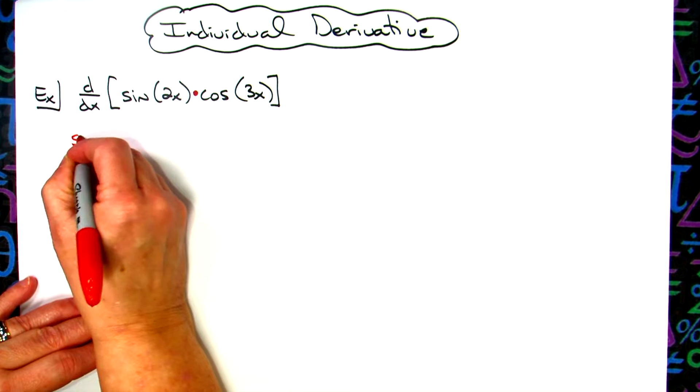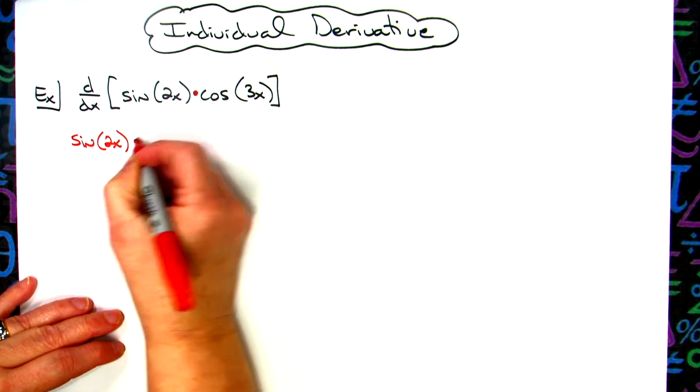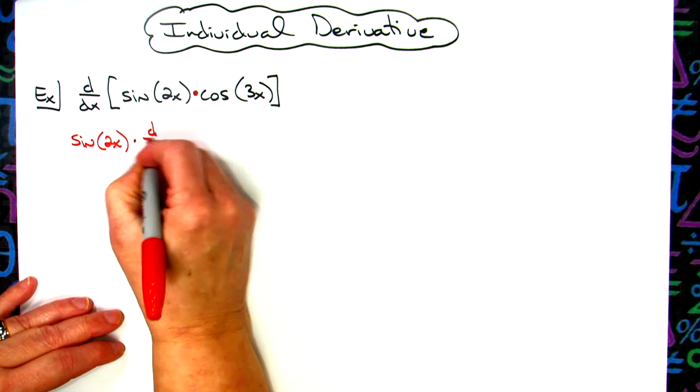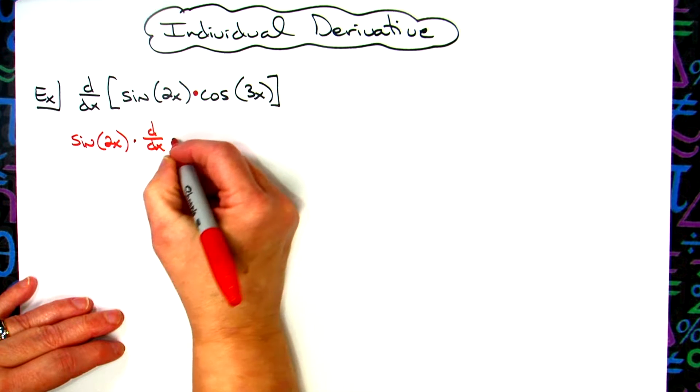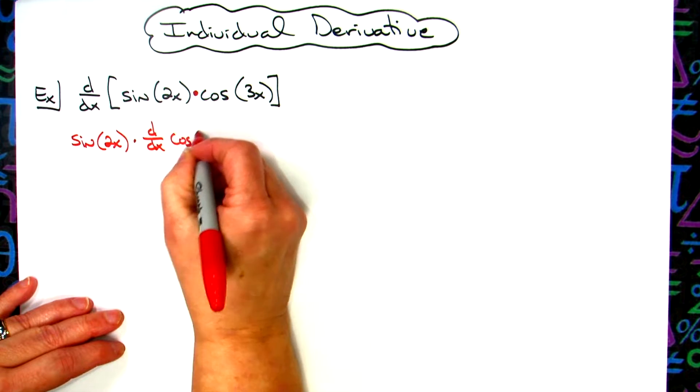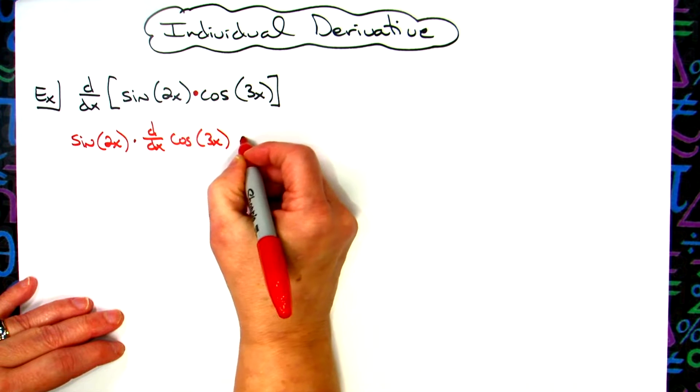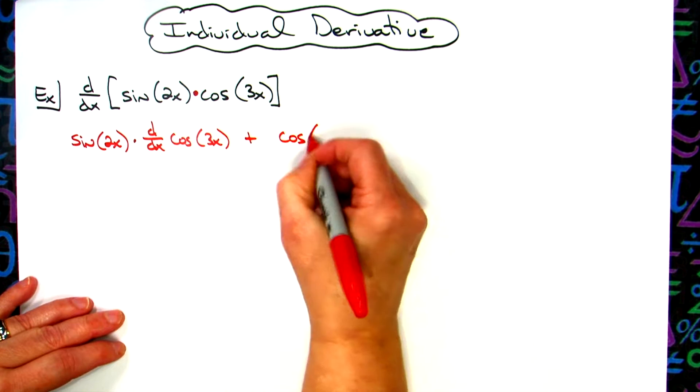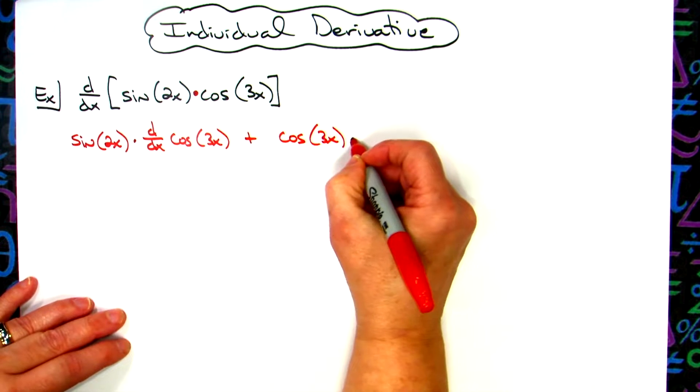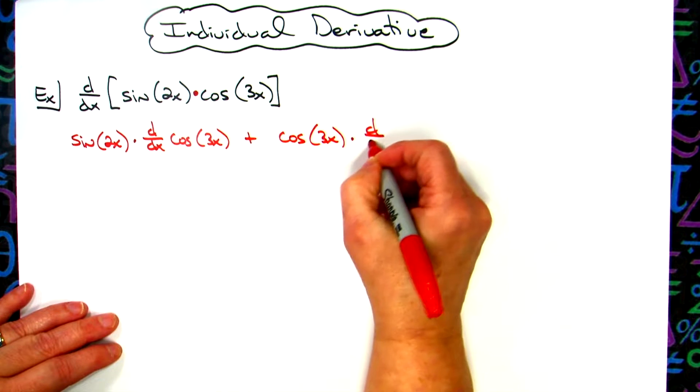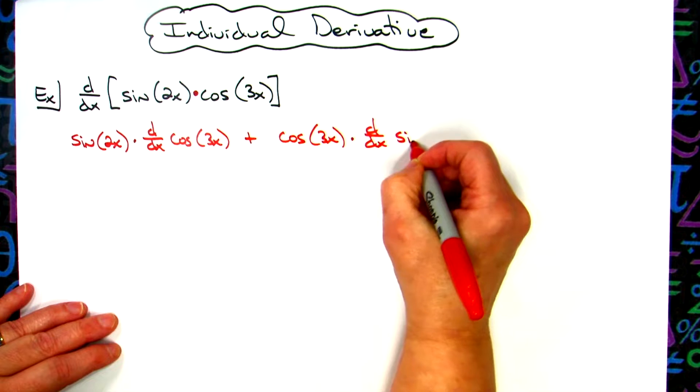All right, so if we're going to start with product rule, we're going to take the sine of that 2x and then multiply it. I'm going to go ahead and use the d/dx notation, so we'll have that d/dx, the derivative of the second function cosine of 3x. We will add to that the second function cosine of 3x and then times the derivative, so I'll use that d/dx notation of the first function.